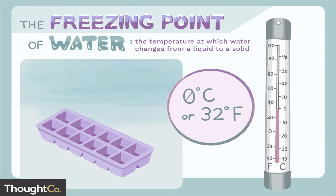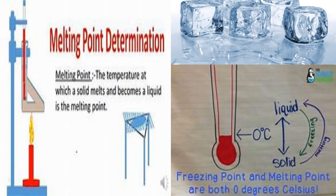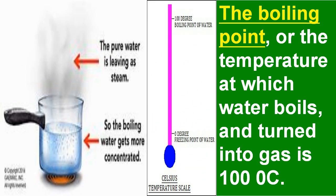When materials reach their melting point, solid materials change into liquid. The temperature at which liquid changes back to solid is called its freezing point. The melting point of ice is 0 degrees Celsius, which is also the freezing point of water. The boiling point — the temperature at which water boils and turns into gas — is 100 degrees Celsius. Amazing!